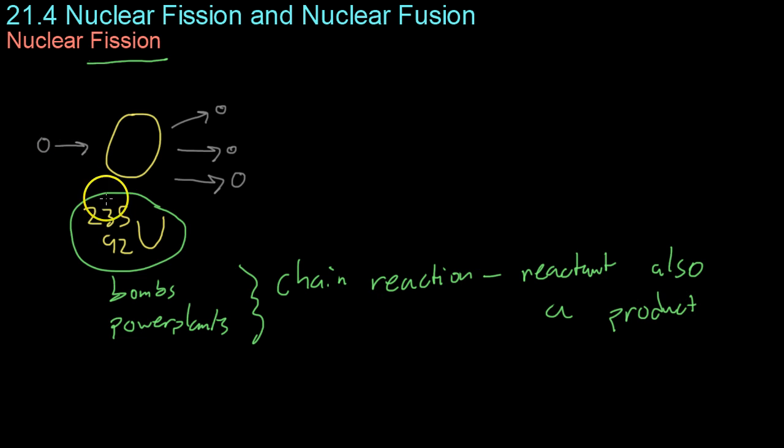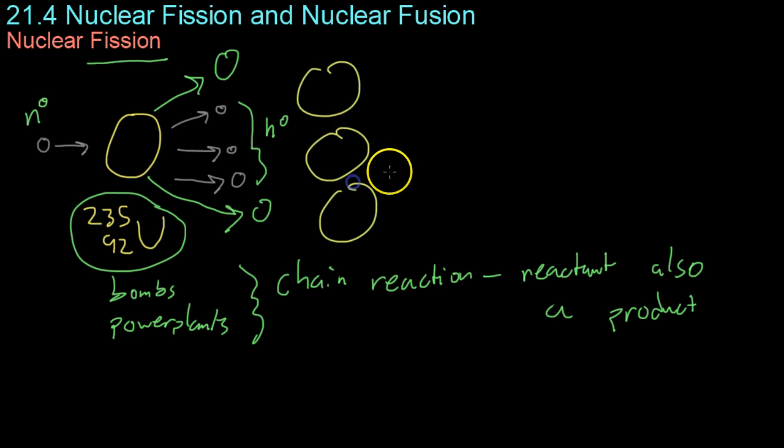For example, if you have this uranium-235 nucleus and you bombard it with a neutron, it will break up into two smaller nuclei, which are both highly radioactive, as well as releasing three other neutrons, which can then go on to hit three other U-235 nuclei, which in turn will release three more neutrons each.